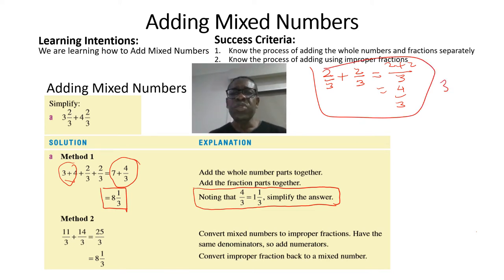3 2/3 is the same as 3 times 3 plus 2, divided by 3, and that gives us 11/3.